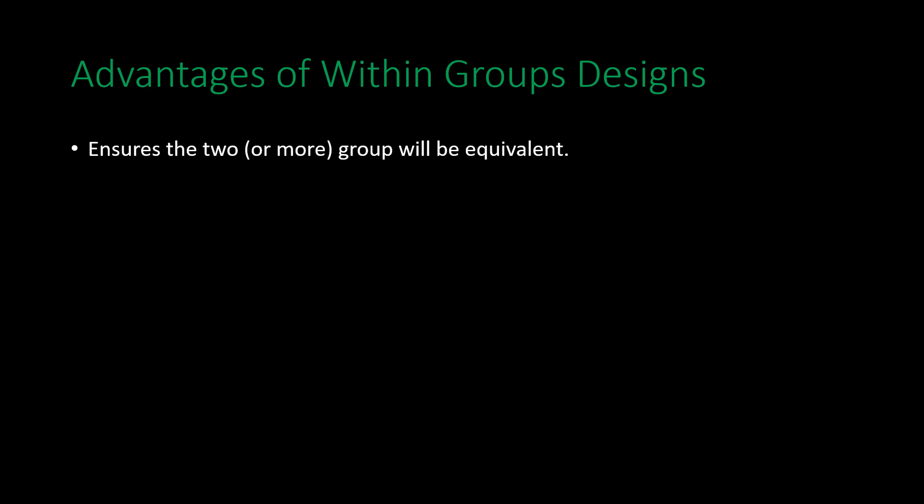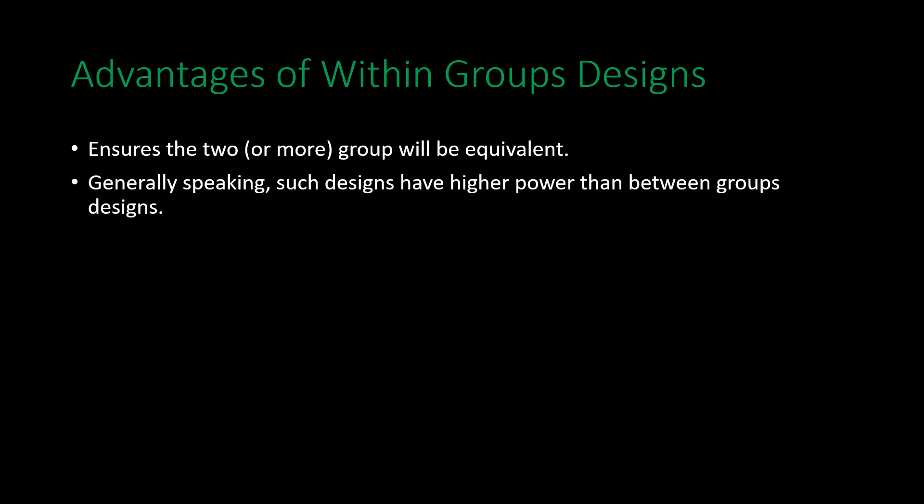Some advantages of within groups designs: they ensure that two or more groups will be equivalent because all groups are made up of the same people receiving different manipulations. Such designs also have higher statistical power than between groups designs — largely because you can remove much of the miscellaneous variance in performance across participant groups since the same people appear in all conditions. For example, measuring how caffeine affects reaction times: some people are naturally faster than others, but by having the same set of people in both groups you can rule out individual differences in reaction time.